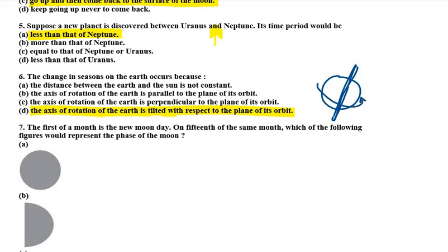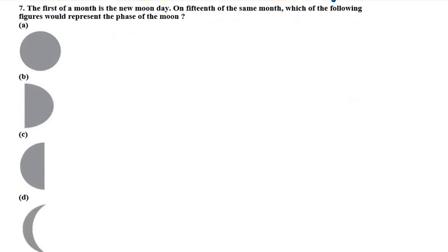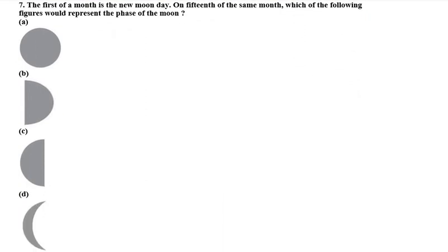The axis of rotation is rotated with respect to the plane of its orbit. Which of the following figures would represent the phase of the moon?